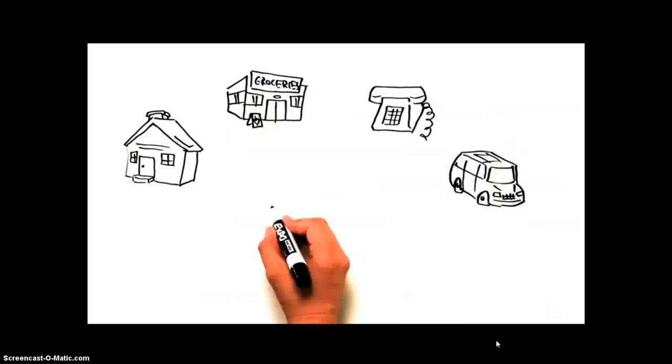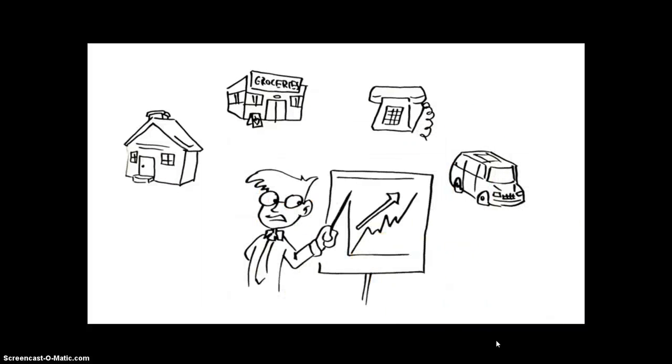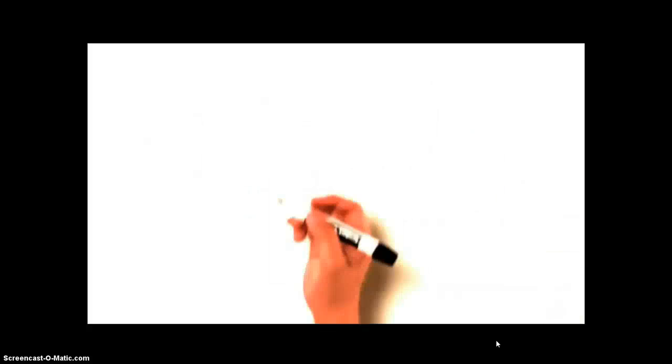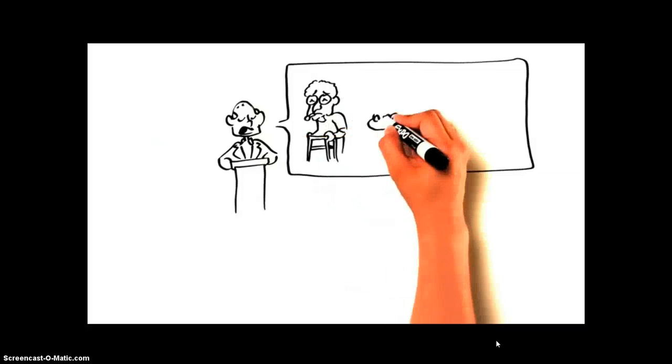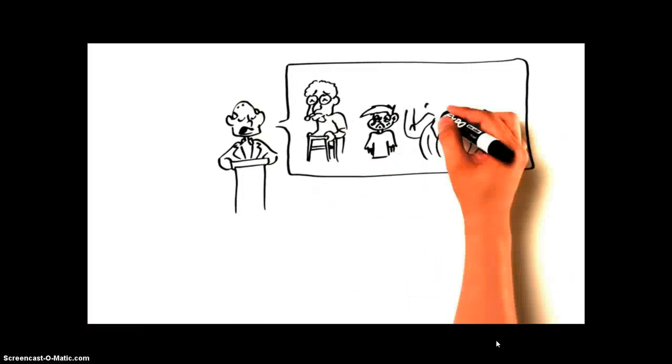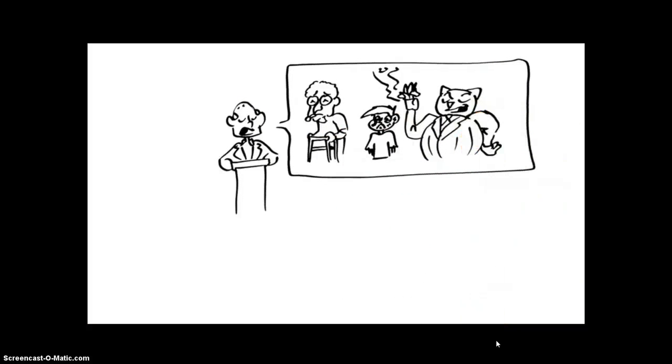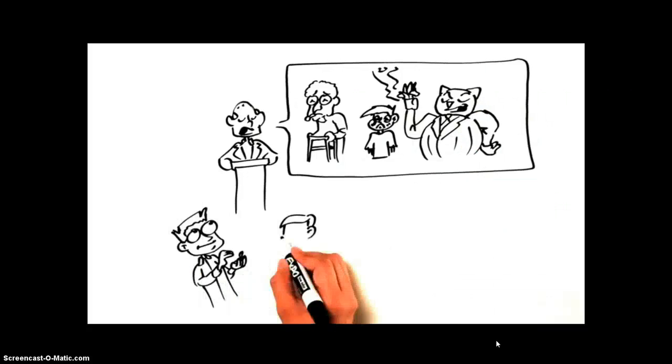We all know that free enterprise is the best system ever devised for creating material prosperity. We have tons and tons of data to prove this. But in debates, we're always going up against heartbreaking stories of sick grandparents and poor kids who can't make ends meet, while Fat Cat CEOs spend a million bucks to decorate their offices.